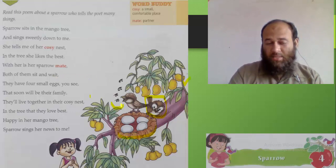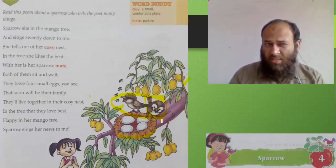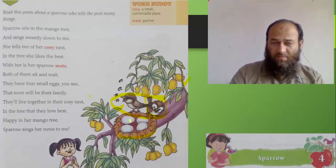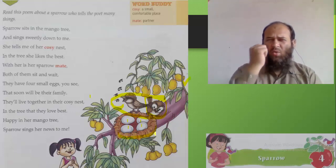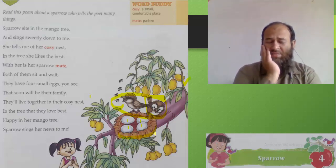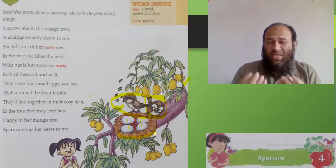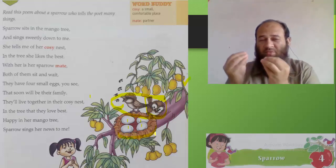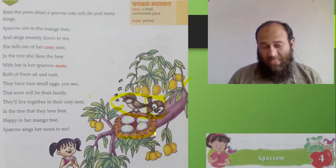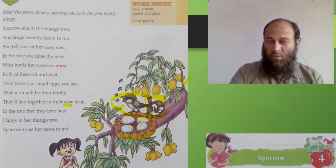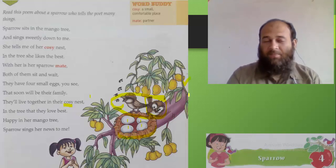Both of them sit and wait. These two sparrows are waiting there in the tree. Why are they waiting? They have four small eggs — four small eggs — that soon will be their family. How will these eggs be the family? The eggs will hatch and chicks will come out. Those chicks will be the family of these two sparrows. They live together in their cozy, comfortable nest. In the tree that they love best — which tree? The mango tree.